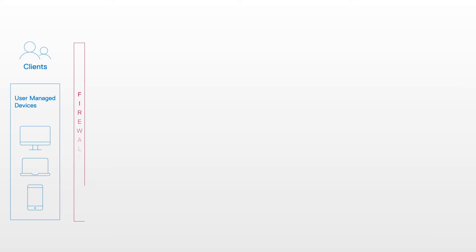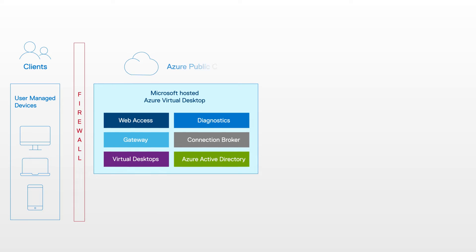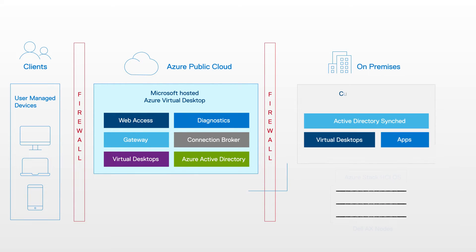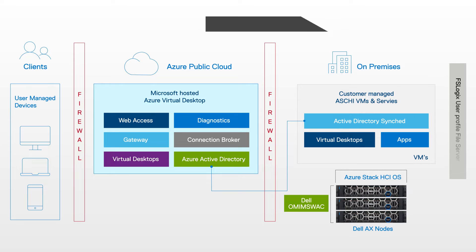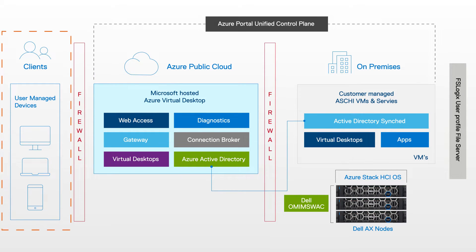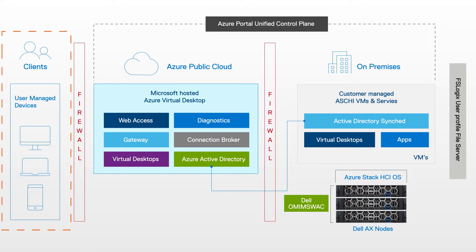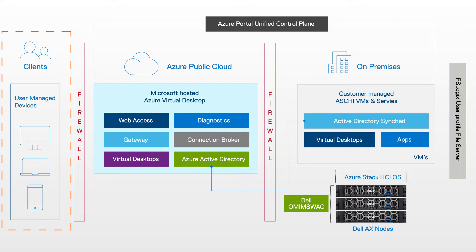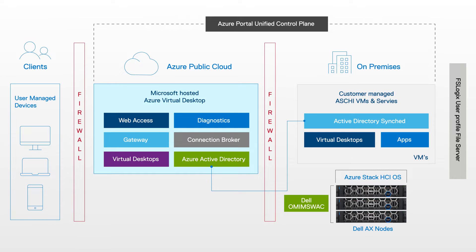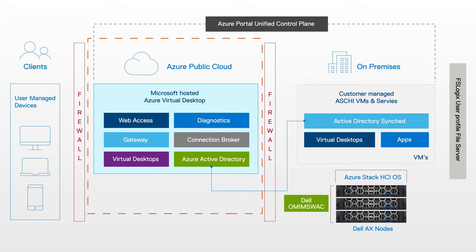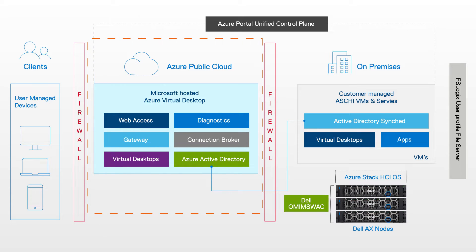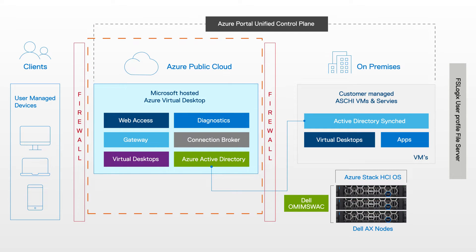Here is the ecosystem of the Azure Virtual Desktop on Azure Stack HCI. The ecosystem consists of three main pillars. Starting from the left, we have the user-managed devices, which are endpoint systems that could be a Windows, Linux, or Mac system connected to the Internet. The VDIs are then accessed from a browser session using a URL and domain credentials. In the middle, we have the Microsoft-hosted Azure Virtual Desktop services, which have the core functionality of the solution.